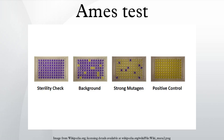The Ames test is often used as one of the initial screens for potential drugs to weed out possible carcinogens. It is one of the eight tests required under the Pesticide Act and one of six tests required under the Toxic Substances Control Act.